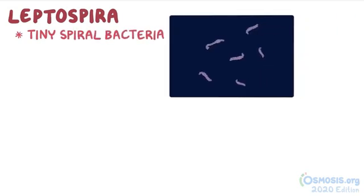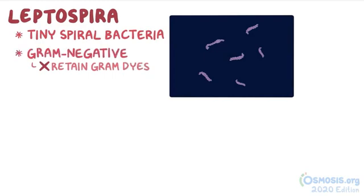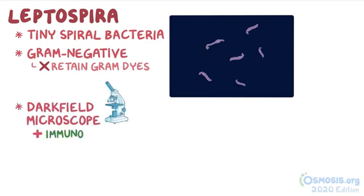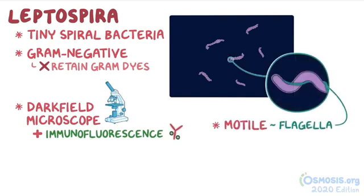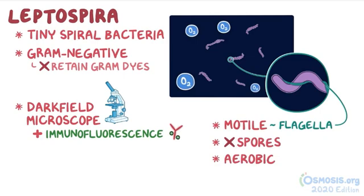Leptospira is a tiny spiral bacteria that stains poorly with gram staining because it doesn't retain the gram dyes well, so it's classically considered gram negative. It's also too tiny to be seen with a light microscope, so you need a dark field microscope with the use of immunofluorescence. Leptospira is also a motile bacteria because it has a flagella that helps it move around. It doesn't form spores and it's aerobic, meaning it needs oxygen to grow.